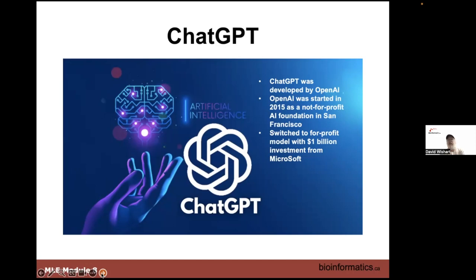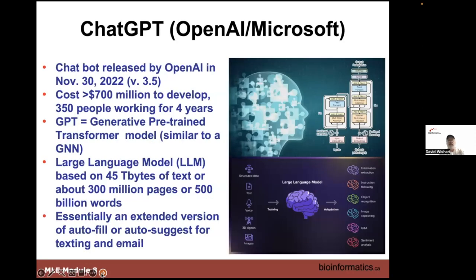It was probably because of the shift to a for-profit model that OpenAI started actively working on ChatGPT. It hit the news at the end of November with the release called version 3.5. It cost about $700 million to develop with around 350 people, starting around 2017-2018 when they became for-profit. They used a model similar to a graphical neural net called a generative pre-trained transformer, using things like attention systems and embedding rather than one-hot encoding.